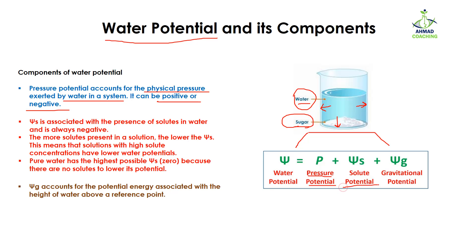The second component is the presence of sugar, which is associated with solute potential, denoted by Ψs. Solute potential is associated with the presence of solute in water — in this case, sugar is the solute. Solute potential is always negative: the more solute present in a solution, the lower the solute potential. Solutions with higher solute concentration have lower water potential.